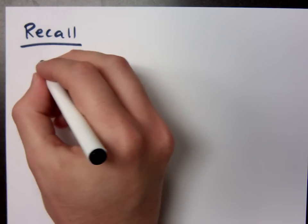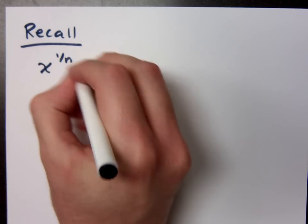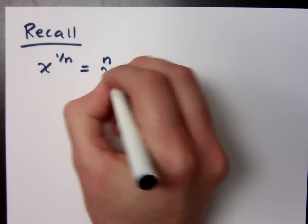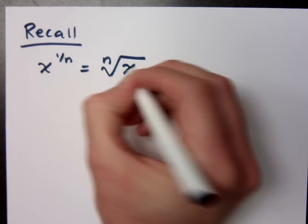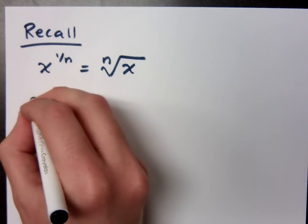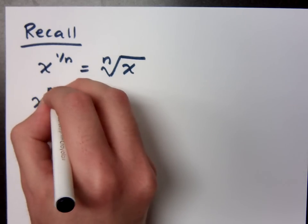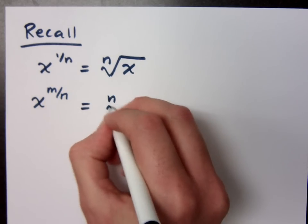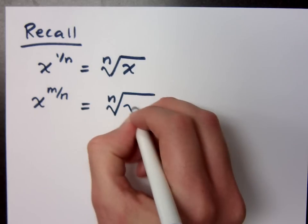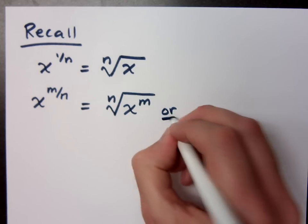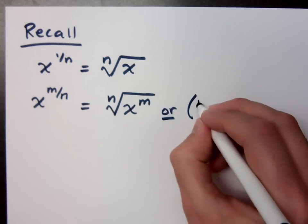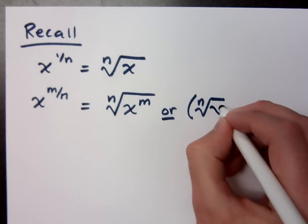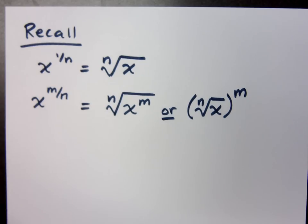Remember how we said, and we even had this on the video earlier about the graphing calculator, if I have x to the 1 over n, that means the nth root of x. The other guy that we saw was if my numerator was not 1 but it was a power, this is the nth root of x to the m, or you could say this is the nth root of x raised to the m power.